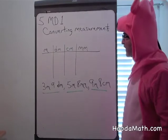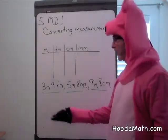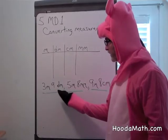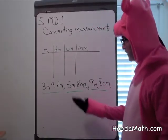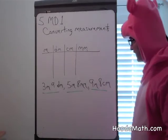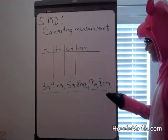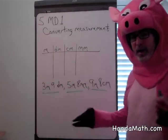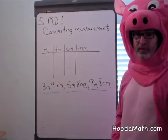Okay, converting measurements. If we had a board that we wanted to be 3 meters and 9 decimeters, another one that was 5 meters and 8 millimeters, another one that was 9 meters and 8 centimeters, and we wanted to know how much wood we're going to have to buy.